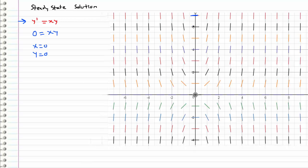We can see that reflected on our slope field plot. At x equals 0 we have slope of 0, and then also along y equals 0 we also have 0 slope.